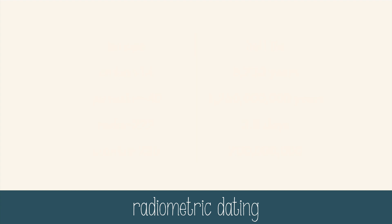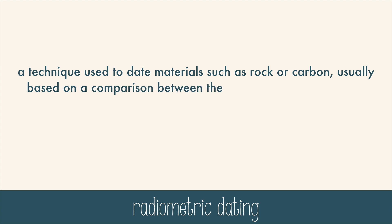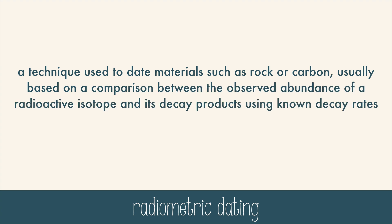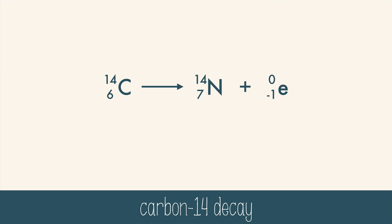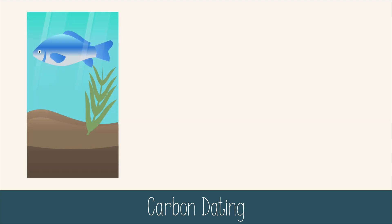We can use our knowledge of half-lives to find out how old things are. Radiometric dating is a technique used to date materials such as rock or carbon, usually based on a comparison between the observed abundance of radioactive isotopes and their decay products using known decay rates. One of the most well-known types is carbon-14 dating. Carbon-14 decays into nitrogen-14 by beta emission, and its half-life is 5,730 years. All living things have some carbon-14 incorporated into their bodies.